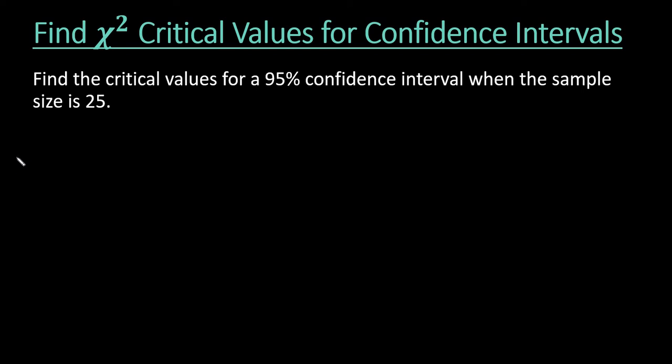Hi, for this video, what I want to do is show you how to find the chi-square critical values for confidence intervals. You can also use the same technique that I show you with the table to find the critical values for a hypothesis test. So if you were working with a hypothesis test, you would do the same process.